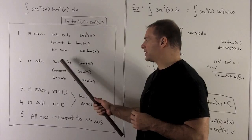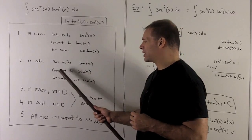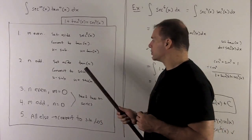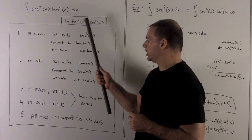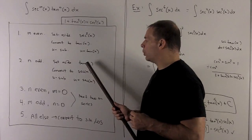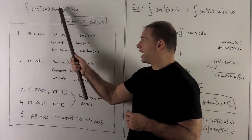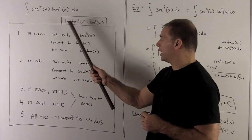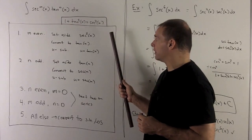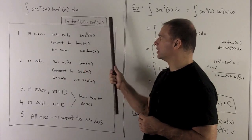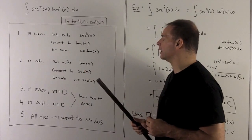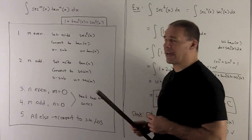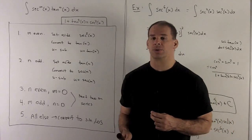For the second case, where n is odd — an odd power of tangent — I set aside one tangent and convert what's left over to secant. I pull one tangent off, leaving tangent to an even power, and use the identity to get everything in secant. Then I u-substitute with u = sec x and follow my nose.